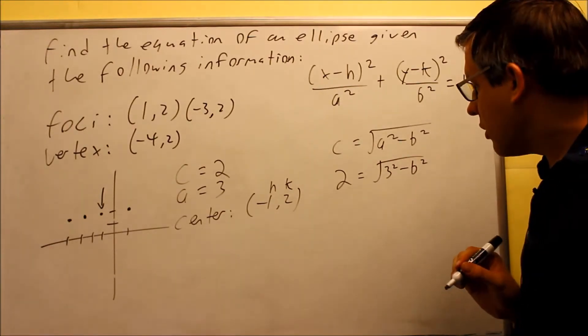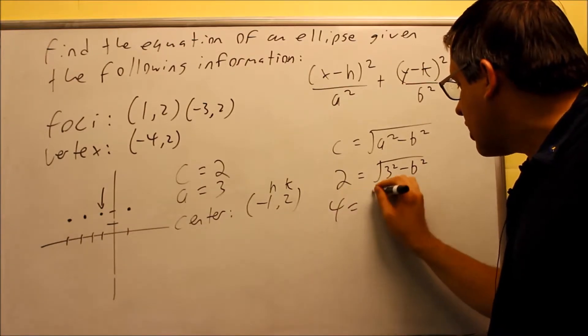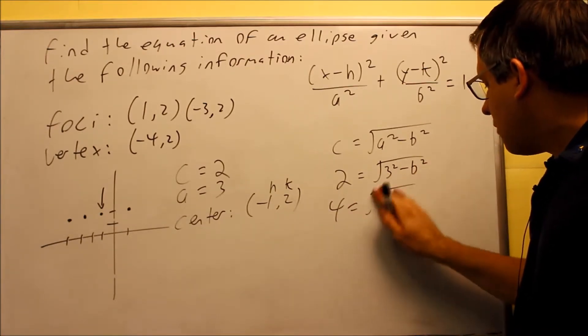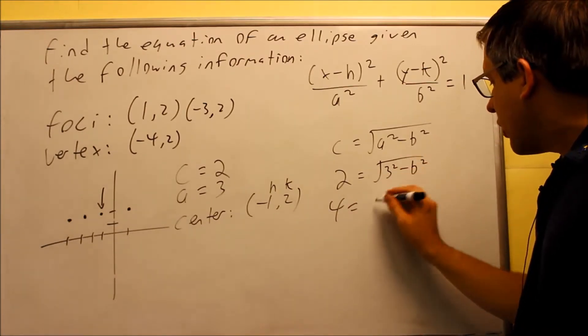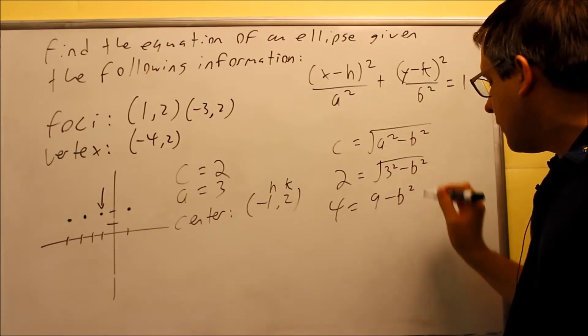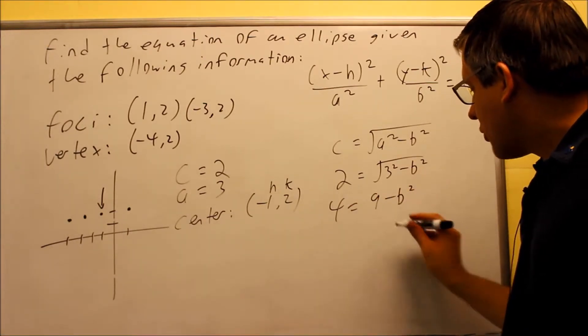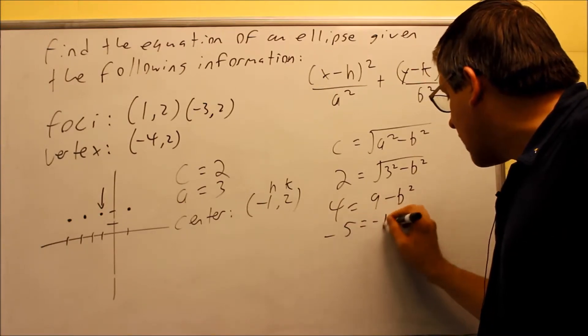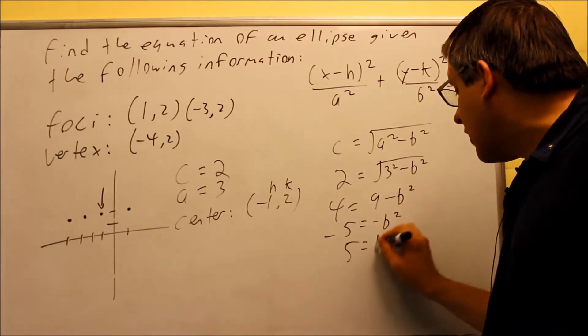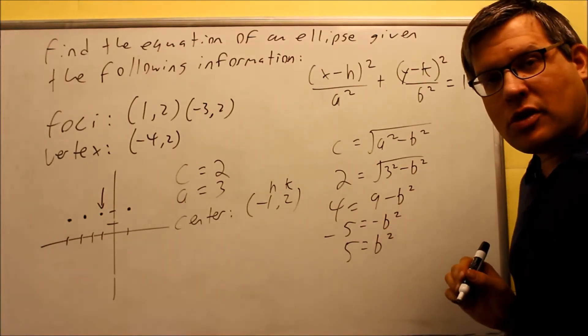Square both sides. 4 is equal to, I can get rid of the radical, and 3 squared is now 9. I have that. So subtract the 9 from both sides. We get negative 5 equals negative b squared. Or 5 is now equal to b squared.